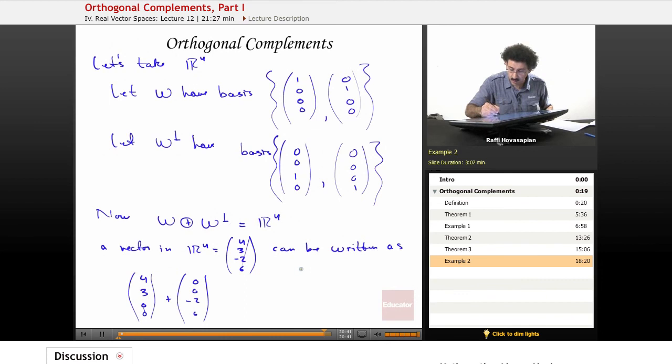And what's nice about this representation, this direct sum representation, is that this representation is unique. So when I write a particular vector as a direct sum of two individual subspaces, the way that I write it is unique. There's no other way of writing that.